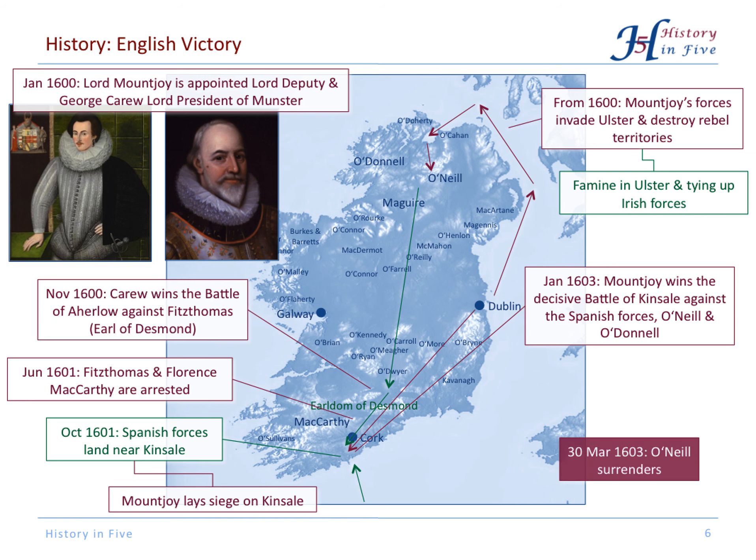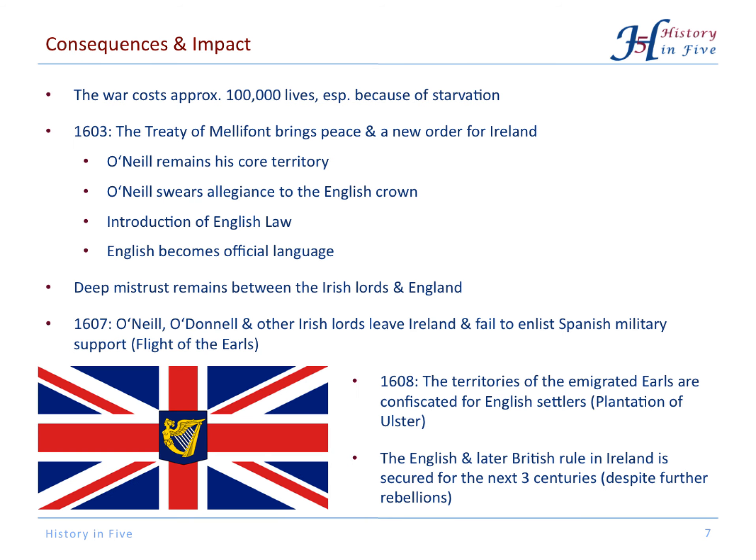On the 30th of March 1603, O'Neill surrendered. The war was quite nasty — it is estimated that 100,000 died. For O'Neill, the outcome was not too bad initially: the Treaty of Mellifont brought peace and a new order for Ireland. O'Neill could still keep his core territories, though he had to swear allegiance to the English crown.